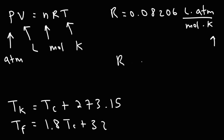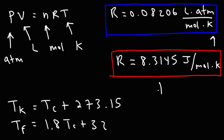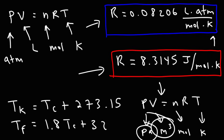There's another value for R as well: R also equals 8.3145 joules per mole per Kelvin. With the ideal gas law, 95% of the time you'll be using the first value. If you use the second value for R, the units will be different — you need to use pressure in Pascals and volume in cubic meters. Temperature is still in Kelvin and n is still in moles.